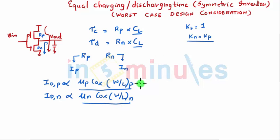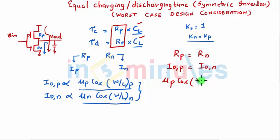If both need to be same for symmetric inverter, that is Kr equal to 1, CL is common. So in order to have equal charging and discharging, your Rp should be equal to Rn, or I can say your Idp should be equal to Idn in terms of proportionality, which is Idp proportional to mu_p Cox (W/L)_p equal to mu_n Cox (W/L)_n. This is exactly what I meant when I said Kn equal to Kp.